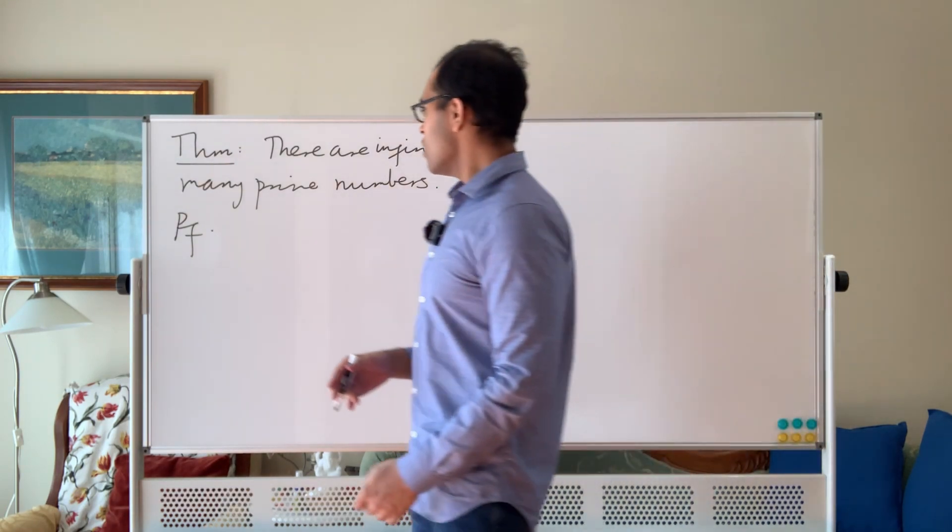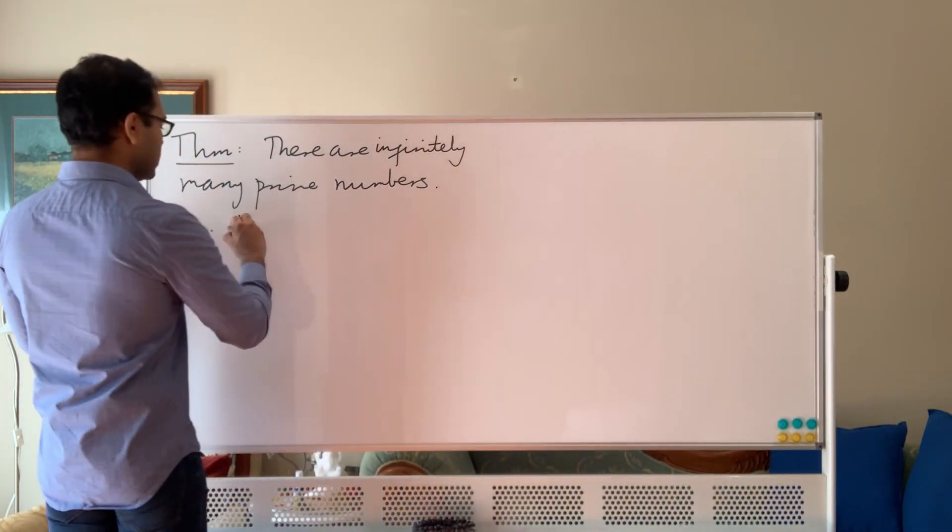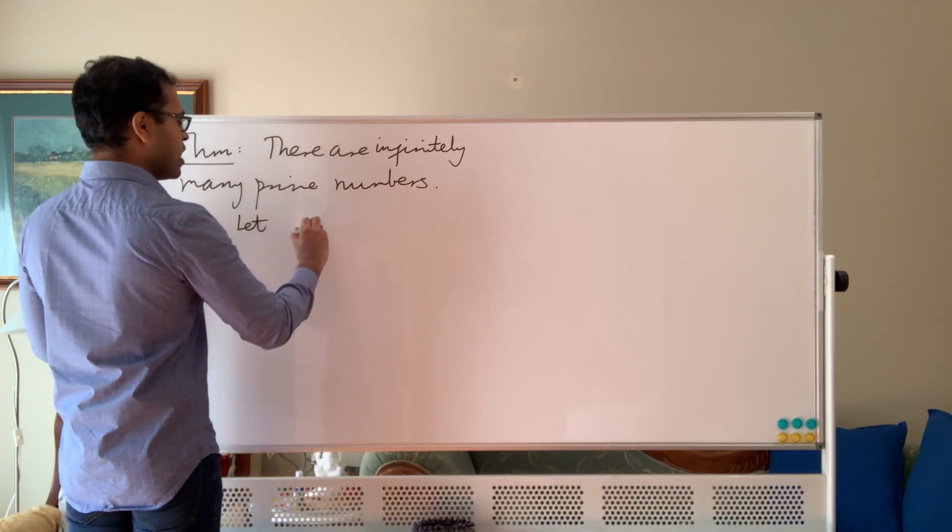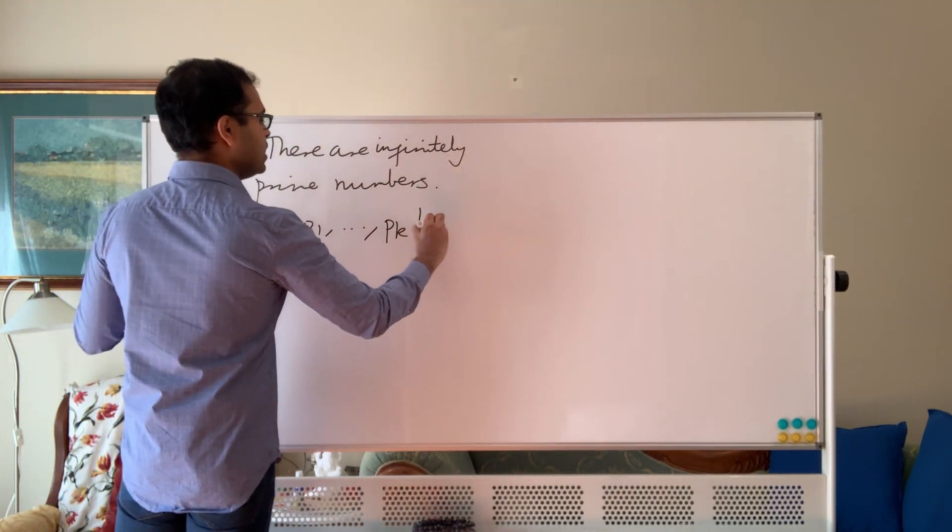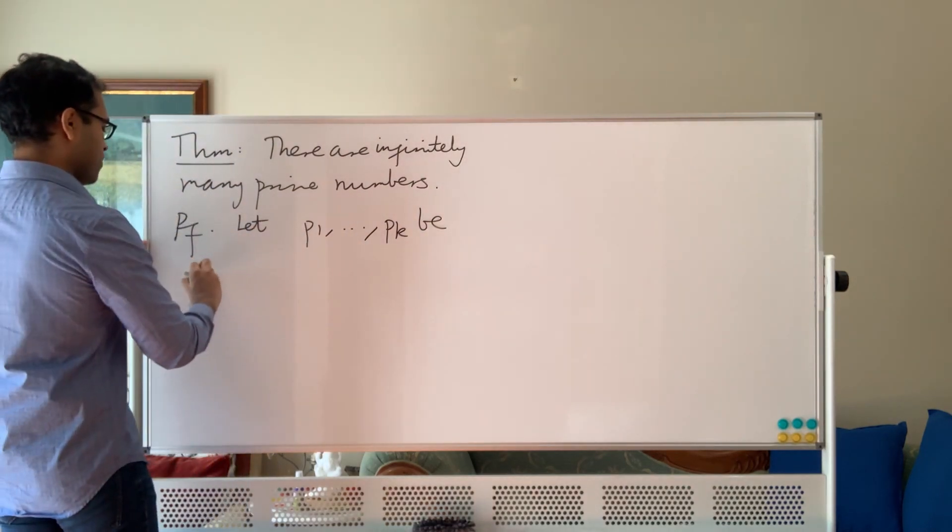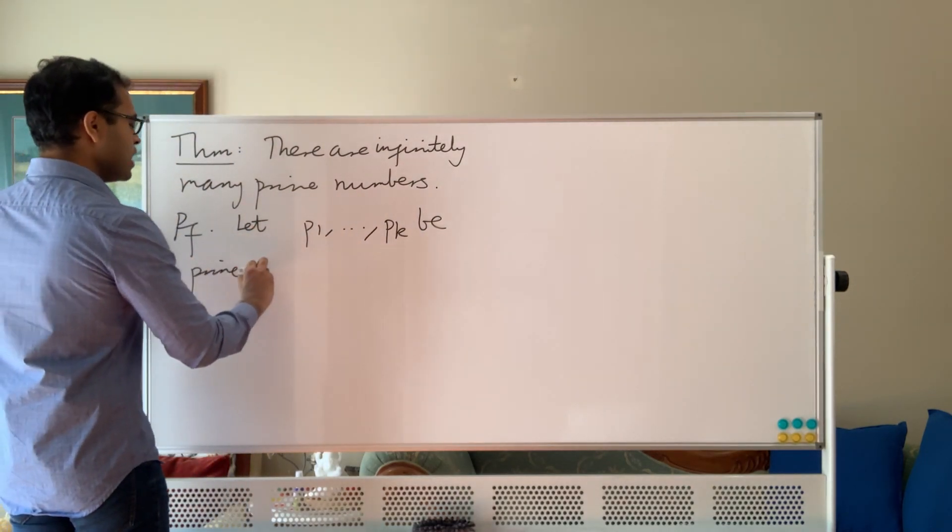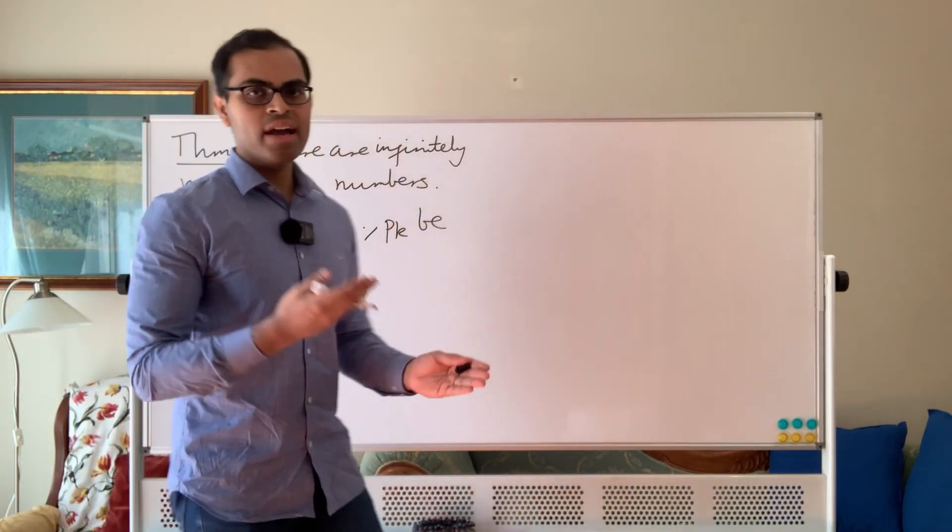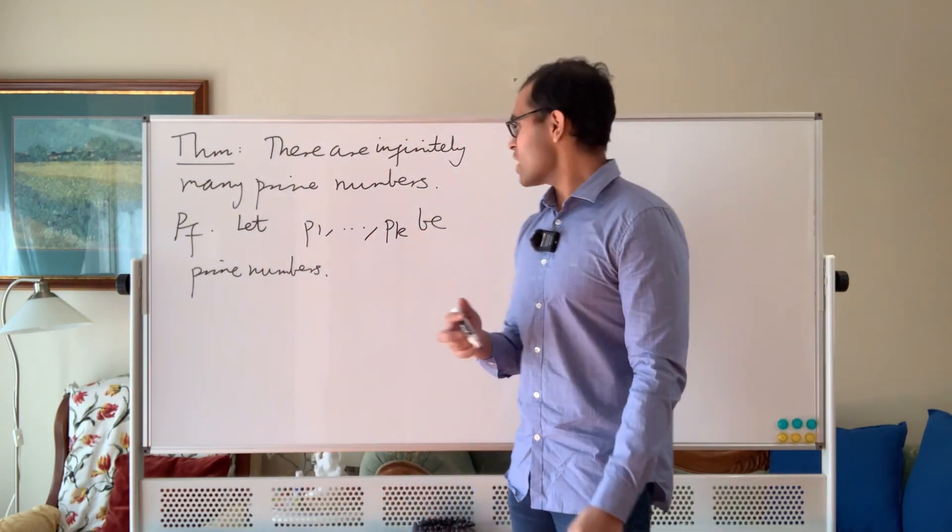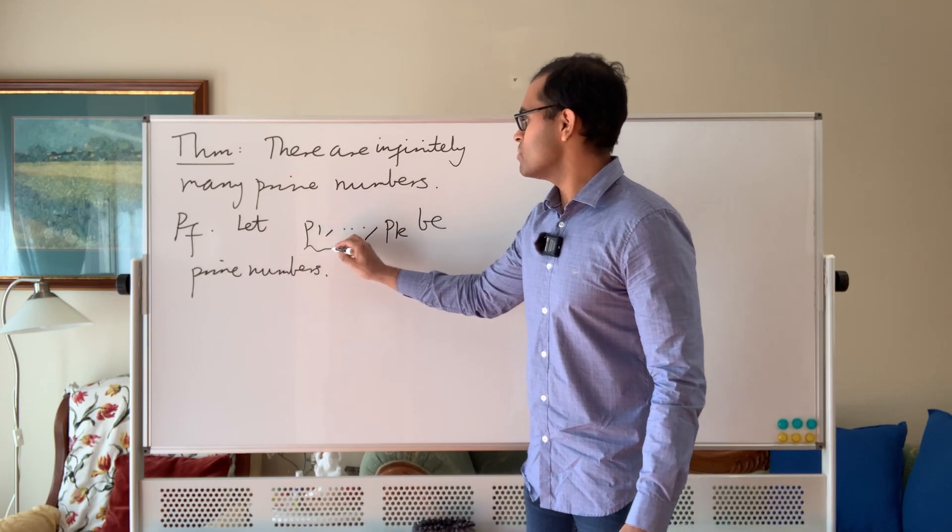So we're going to say let P1 dot dot Pk be prime numbers. P1 dot dot Pk is just labels, so P1 is a prime, P2 is a prime, P3 is a prime. The subscript just says there are k different primes in this list.